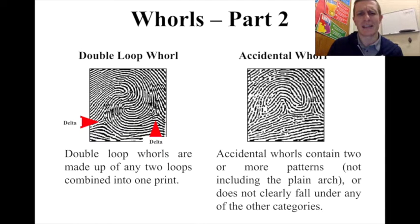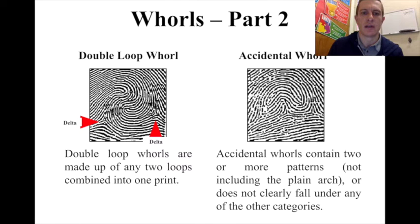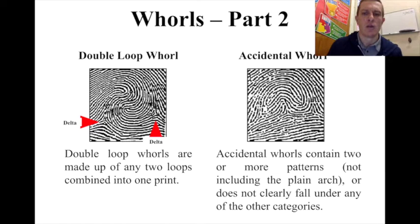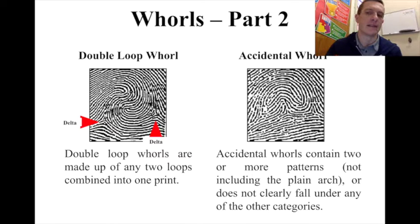Occasionally you'll see a double whorl — two whorls occurring at the same time. Sometimes people have a muddy composition where it looks like an arch but there's some whorl pattern and no real deltas — we call that an accidental whorl. There's no real pattern, so it just doesn't fall into any specific category.